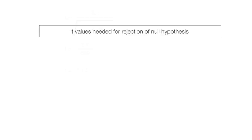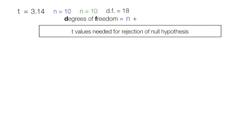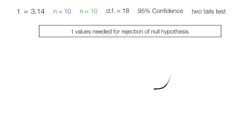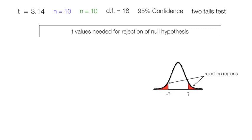Our t-statistic is equal to 3.14. Both sample sizes are equal to 10, and the degrees of freedom are 18, which is the two sample sizes minus 2. My test is at a 95% confidence level and I'm doing a two-tail test. On the bell curve, the rejection regions are shown in red, and I need to find the critical values. You look those up in the back of a statistics book based on these parameters.